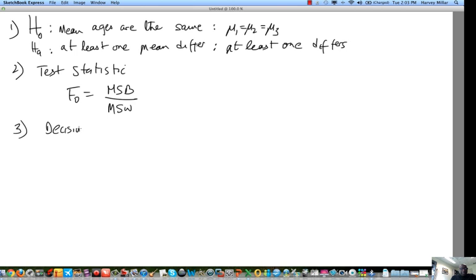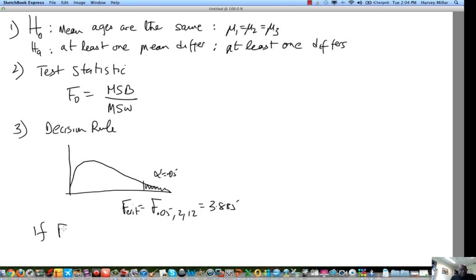Three: decision rule. We're doing an F test. Our F distribution looks like this. This is alpha 0.05, our F critical, which is F 0.05, 2, 12, which is 3.885. All we need to say now is if our F0 is greater than 3.885, we will reject H0. Otherwise, do not reject H0.